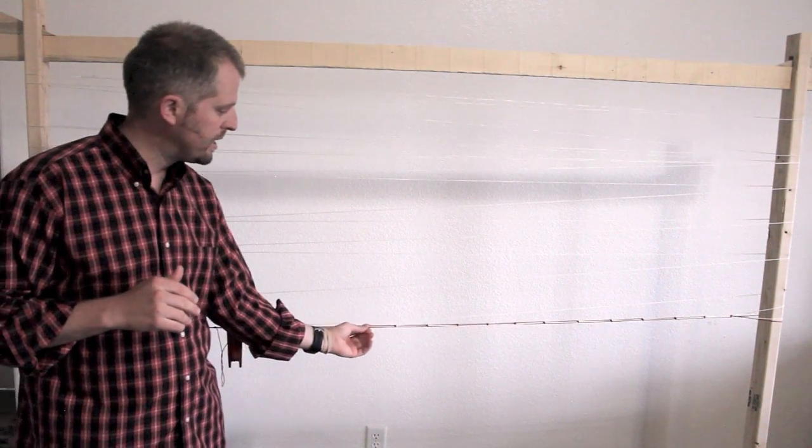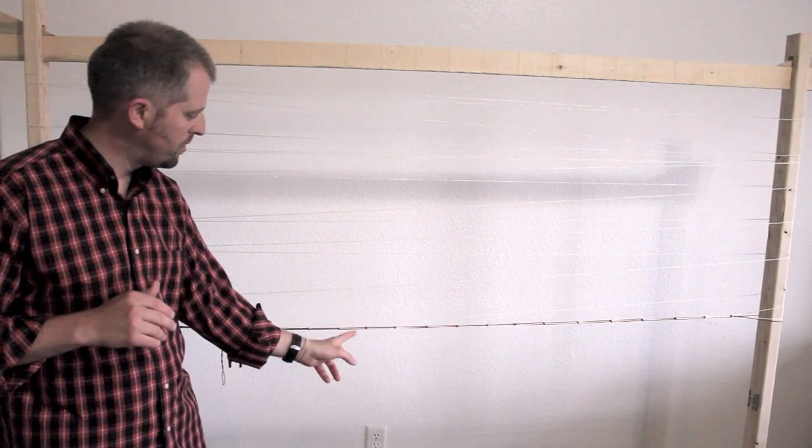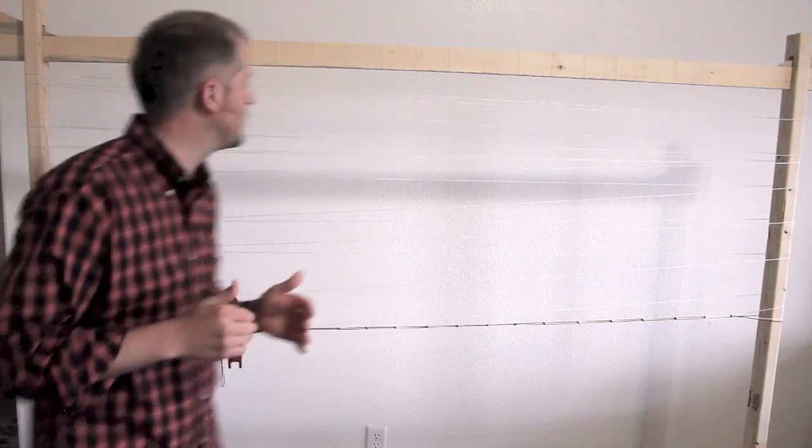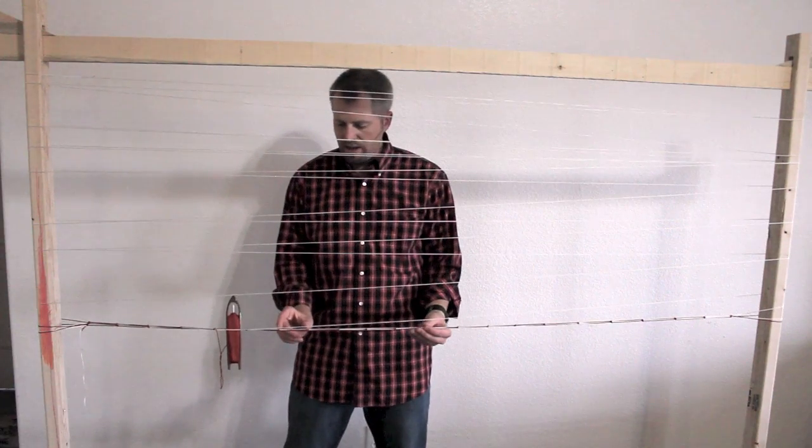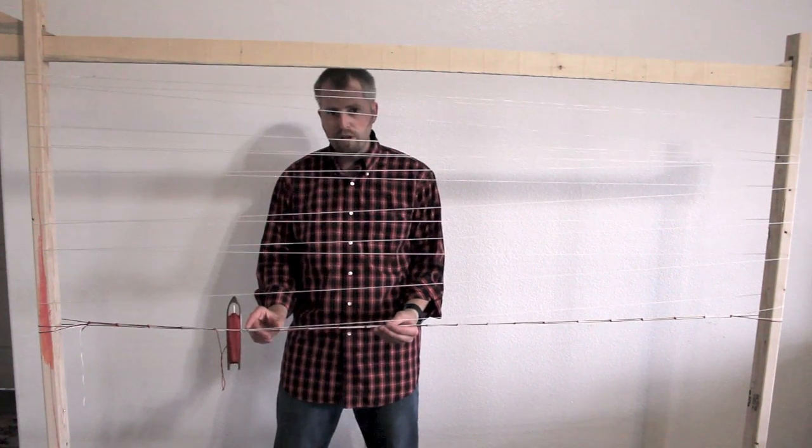But also more importantly, it provides the spacing so that your hammock, the weaving has a very even look throughout the hammock. Most quality hammocks have 20 of these spaces and they're evenly spaced about three to four inches apart.